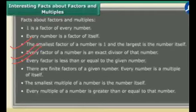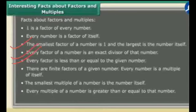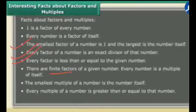There are finite factors of a given number. Every number is a multiple of itself. What is the meaning of finite? Infinite means it can go on and on, but finite means fixed or limited. Like we have seen the factors of 10 are 1, 2, 5 and 10 — only 4 factors, which is fixed. But multiples are infinite — we can multiply 2 times, 3 times, 4 times, infinite times. So finite means fixed and limited for factors.